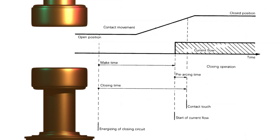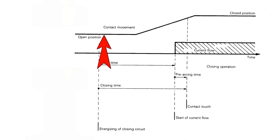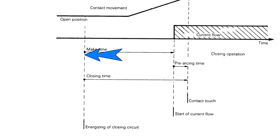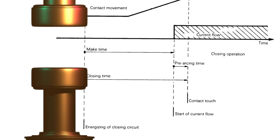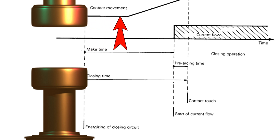Now we come to the closing time of a circuit breaker. This horizontal line represents the open position of the circuit breaker. At this moment, the closing circuit is energized. But even when the closing pulse reaches the closing coil, the circuit breaker does not begin its closing operation immediately — the moving contact does not start moving towards the fixed contact right away. This delay is due to the time taken for mechanical movement to propagate through different hinges, levers, and gears before reaching the moving contact. After a short delay, the moving contact begins to move towards the fixed contact.